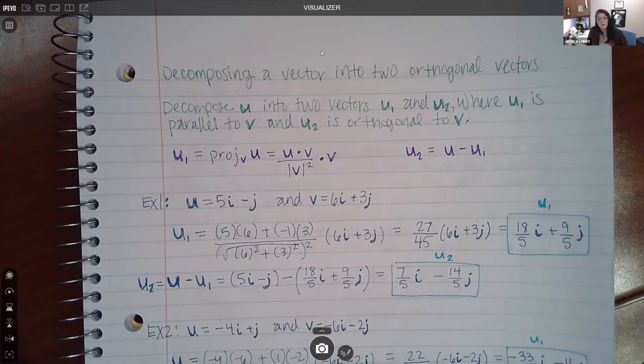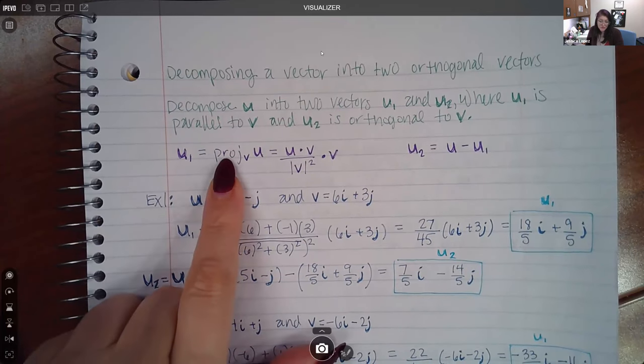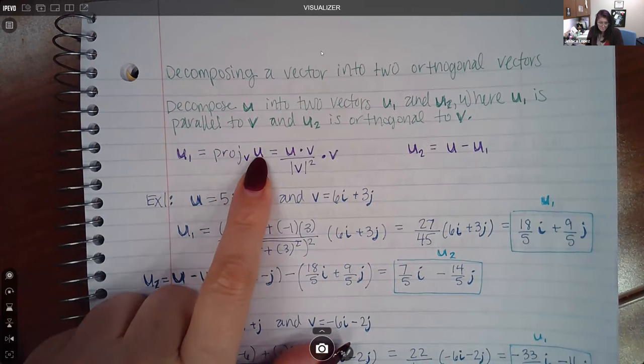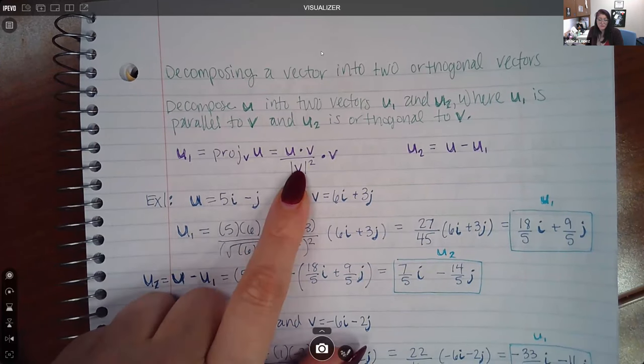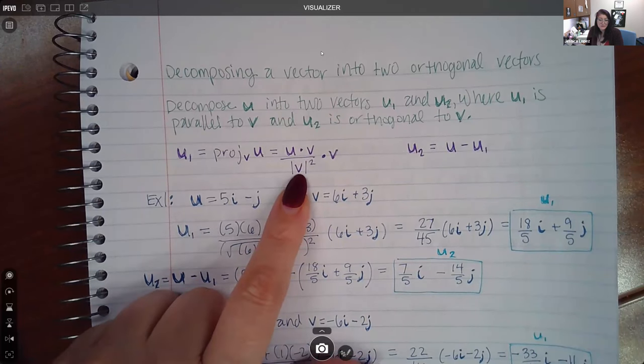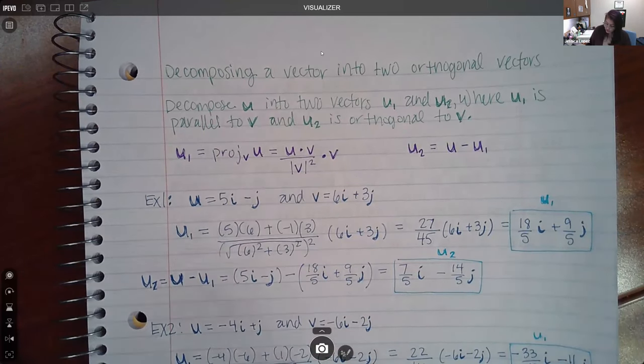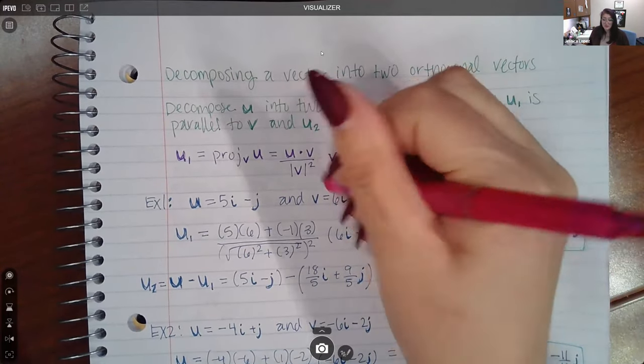Now, Alex does give you a formula to finding this U1 and this U2. So U1 is actually defined as the projection of U onto V and it's found by this formula. So you're going to take the dot product and then, this dot should not be here actually, it's just a multiplication.